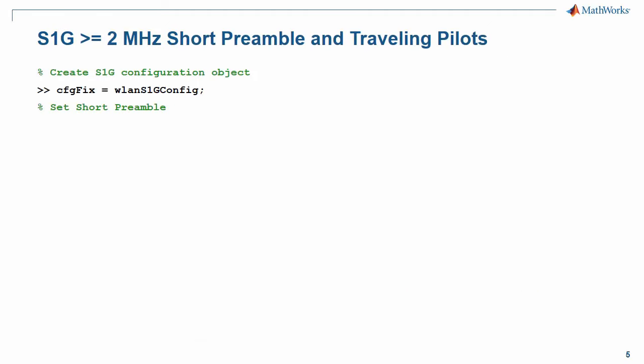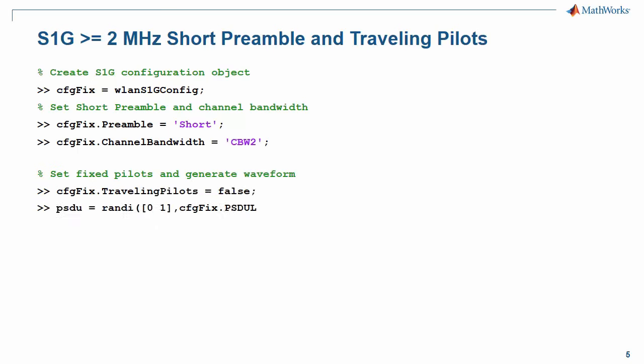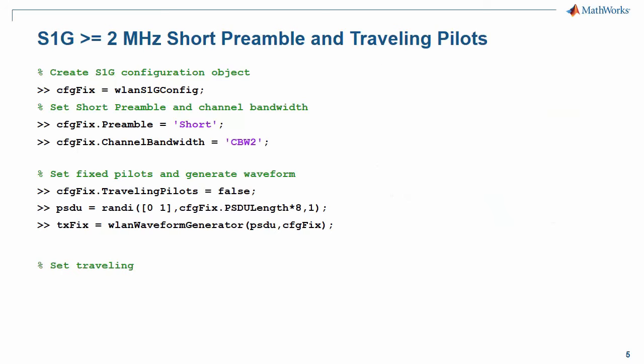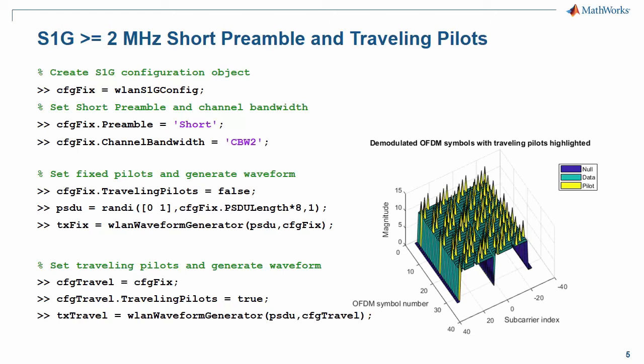An S1G short preamble waveform with 2 MHz channel bandwidth is considered in this example. The short preamble is set up by specifying the preamble property of the WLAN S1G config object to short and a channel bandwidth greater than or equal to 2 MHz. 802.11 standards including S1G have pilots with fixed locations between OFDM subcarriers. When fixed pilots are considered, their position does not change over time and their magnitude is the same as data subcarriers. However, tracking the variant channel conditions due to a high Doppler environment is not effective with fixed pilot locations. Traveling pilots have been introduced in S1G to reduce the effect of the Doppler spread caused by vehicular motion. If the traveling pilot's property of the WLAN S1G config is set to true, the position of the pilot changes over time, and their magnitude is 1.5 times the magnitude of data subcarriers.